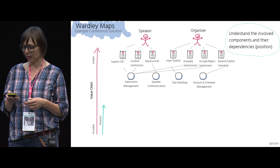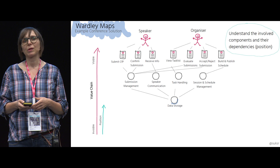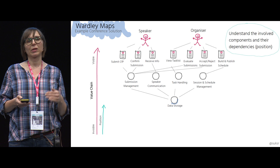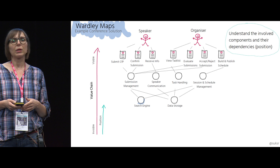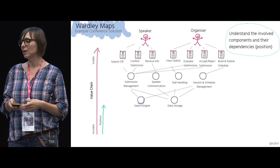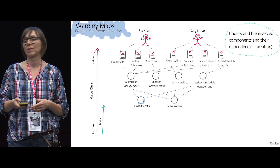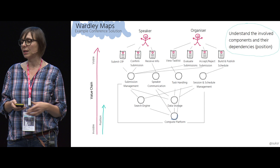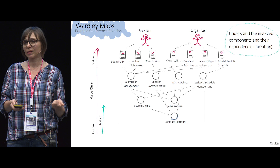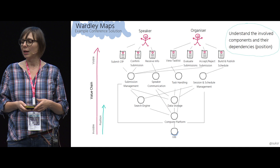The next question is: what are the involved components and their dependencies? We have four different components that fulfill user needs directly: submission management, speaker communication, task handling, and session and schedule management. We also have the data storage component to store the state of the domain model, which is less visible to users. Since the organizer would like to search submissions by content or speakers by name, we need a search engine component facilitating submission management and session/schedule management. Each service — including the search engine and data storage — needs a compute platform, which runs on top of a virtual machine.